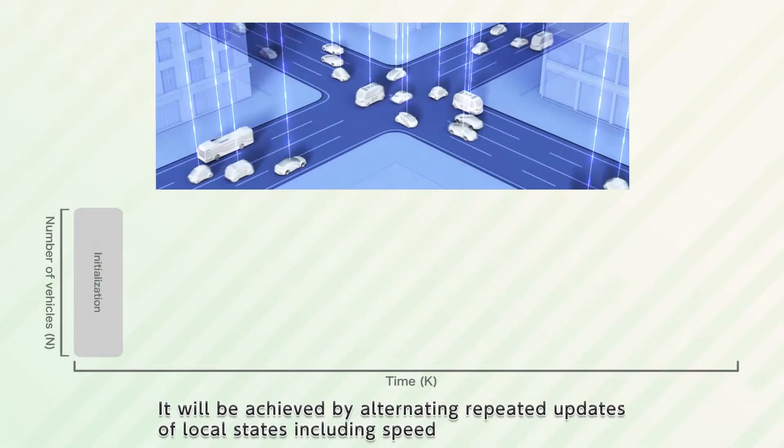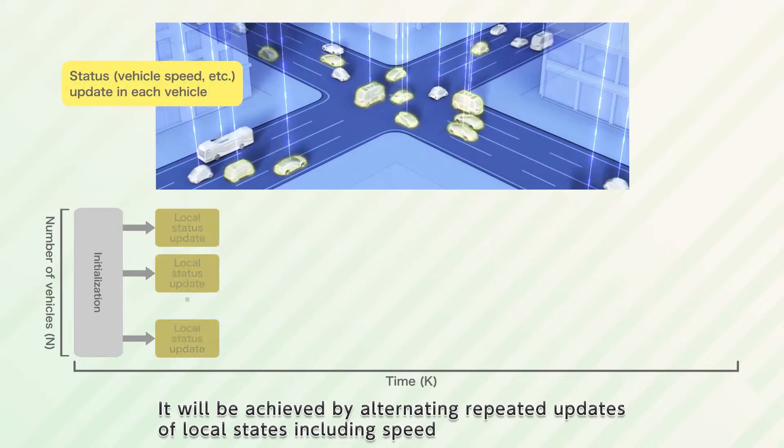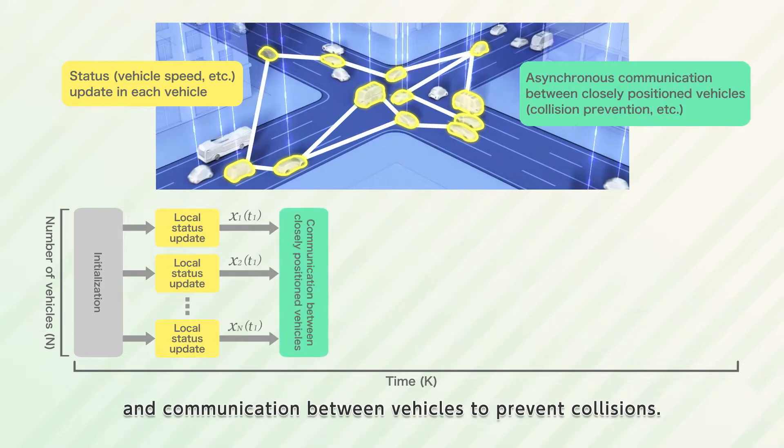It will be achieved by alternating repeated updates of local states including speed and communication between vehicles to prevent collisions.